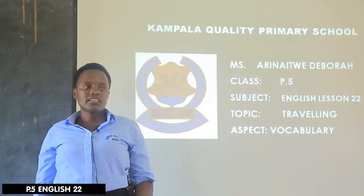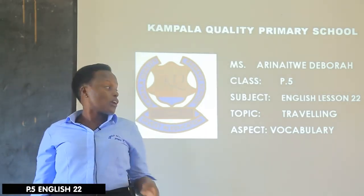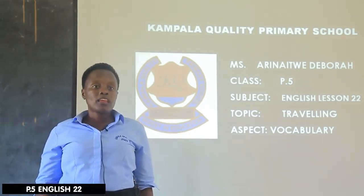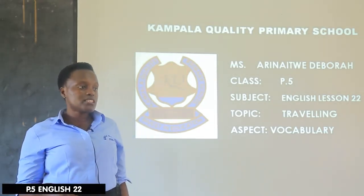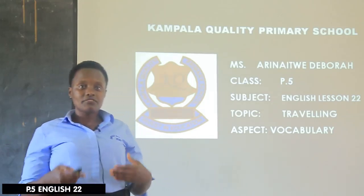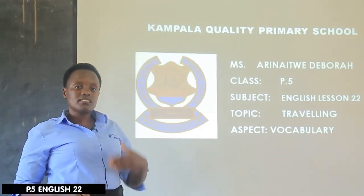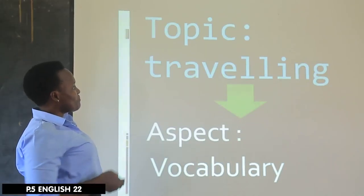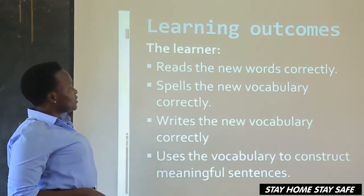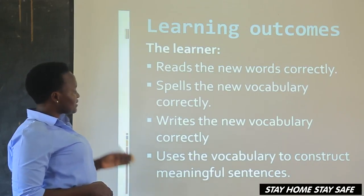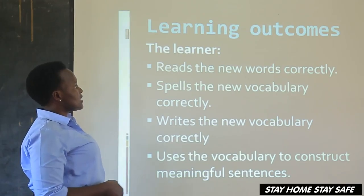Last time when I was here, we were talking about print media, but now we are going to talk about traveling. Last time we were also talking about tenses, so I'm still going to review the work I gave you last time. I hope you did it and wrote the answers. Now get a pencil and we cross-check together. By the end of the lesson, you should be able to read the words correctly, spell the new vocabulary correctly, write the words correctly, and use the vocabulary to construct meaningful sentences.